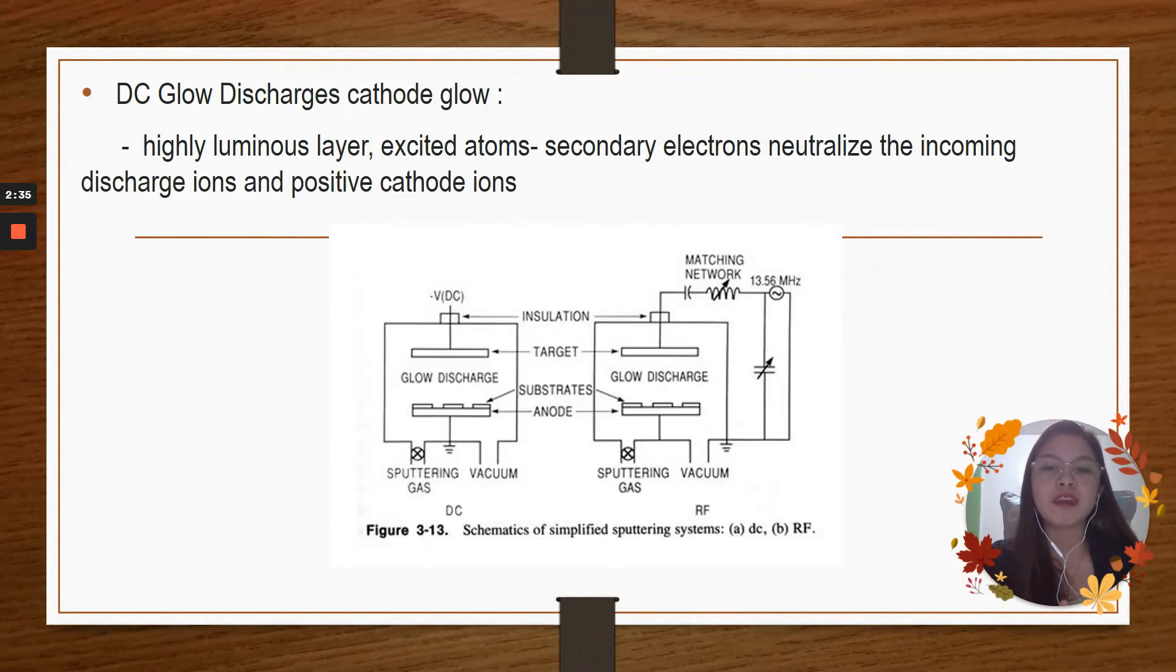As you can see in this picture, we have the figure 3-13, this is what we call schematics of simplified sputtering system. In part A, we have the DC or the direct current. And for part B, we have the RF or the radio frequency. Direct current and radio frequency are having the same levels of words. But as you can see, in radio frequency, there is an impedance, which we call the matching network or the capacitor inductor that is needed to ensure the maximum power delivery.